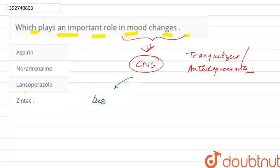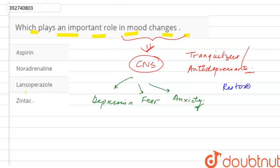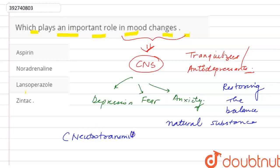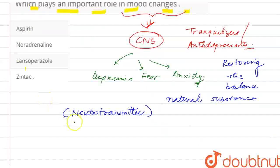What do they do? They treat depression, anxiety, and fear — these emotions can be addressed. How? By restoring the balance of certain natural substances, which are our neurotransmitters, which send signals from the nerves to the receptors, and then our body works accordingly.